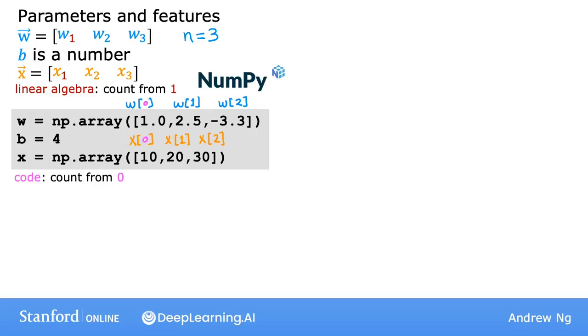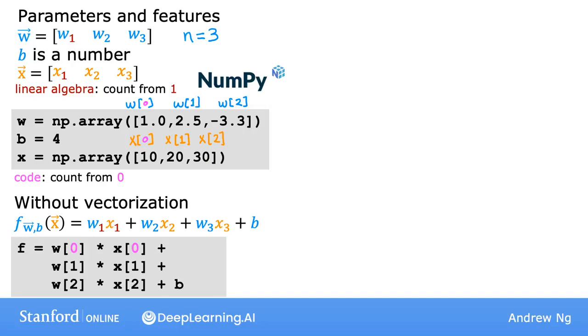Now let's look at an implementation without vectorization for computing the model's prediction. In code, it would look like this: you take each parameter w and multiply it by its associated feature. Now you could write your code like this, but what if n isn't three but instead n is 100 or 100,000? It's both inefficient for you to code and inefficient for your computer to compute.